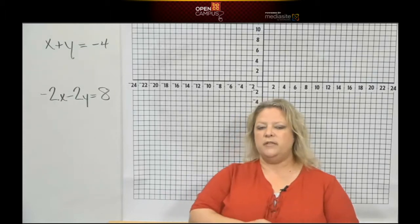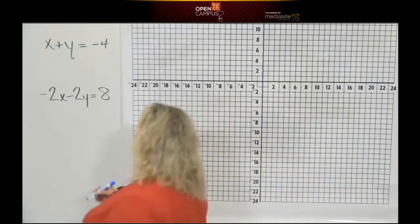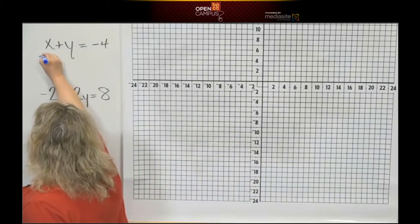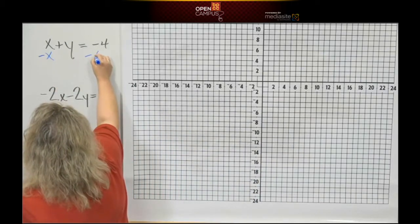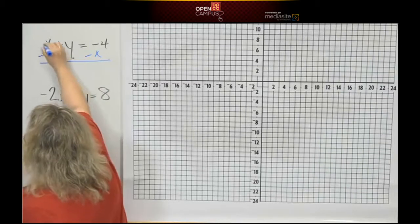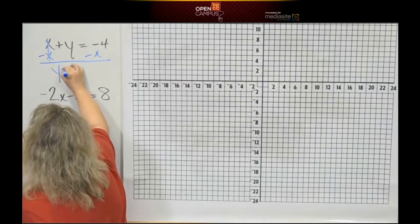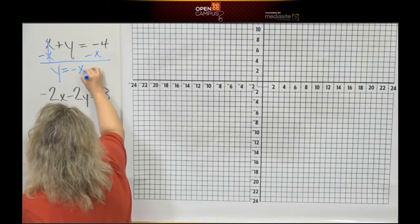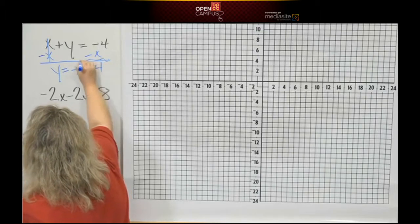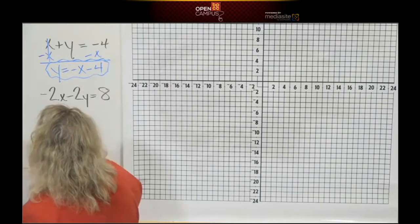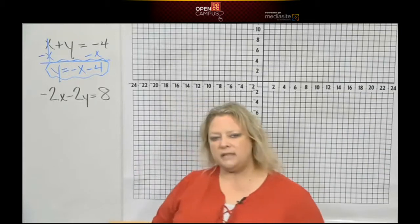So again, before we do this, what do we have to do? Put it in slope-intercept form. So let's move that x over by doing the opposite again, and that's going to give me y is equal to negative 1x minus 4. Okay, draw my little circle around there so that you can see that's the end of that one.